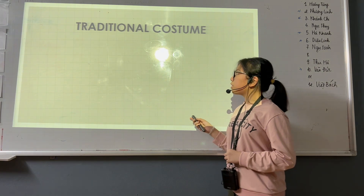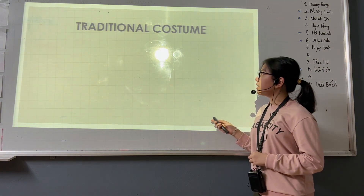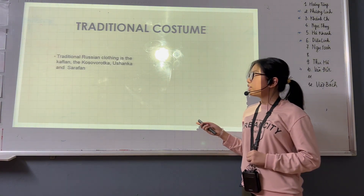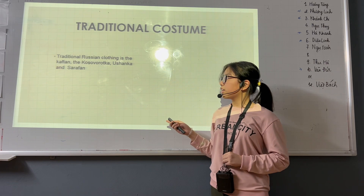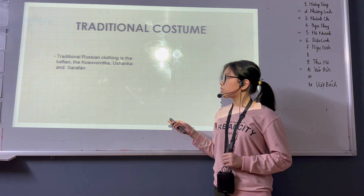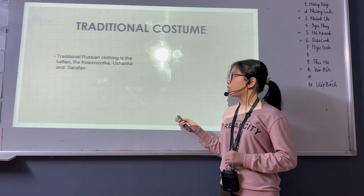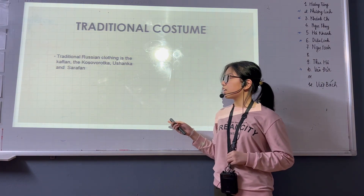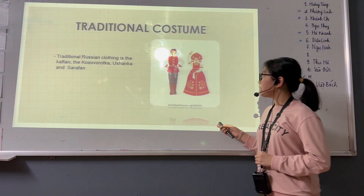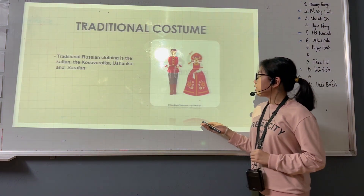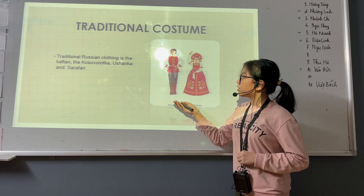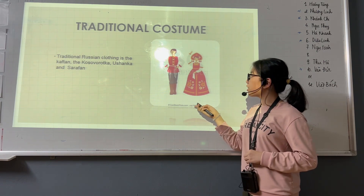Next, I will talk about the traditional costume. Traditional Russian clothing includes the Kosovorotka, Ushanka, and the Sarafan dress. Here is the traditional Russian clothing.